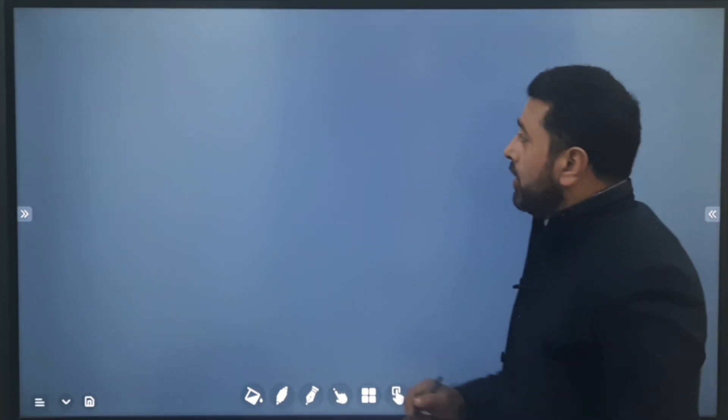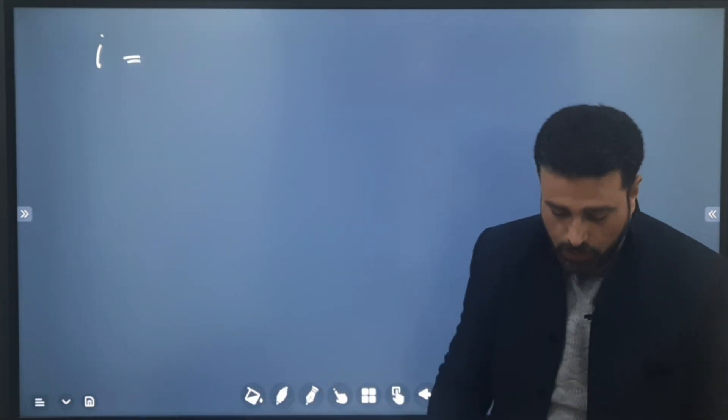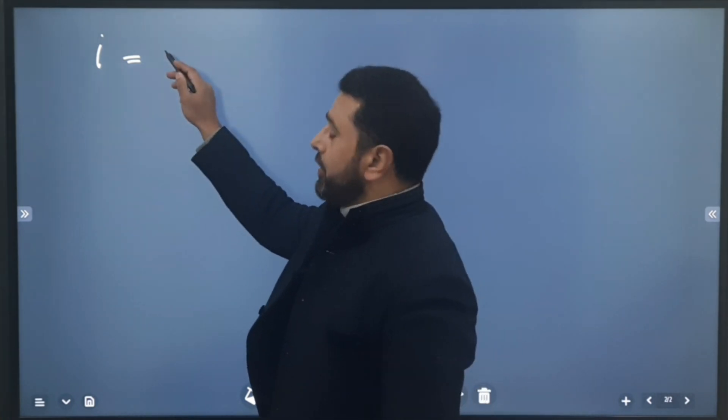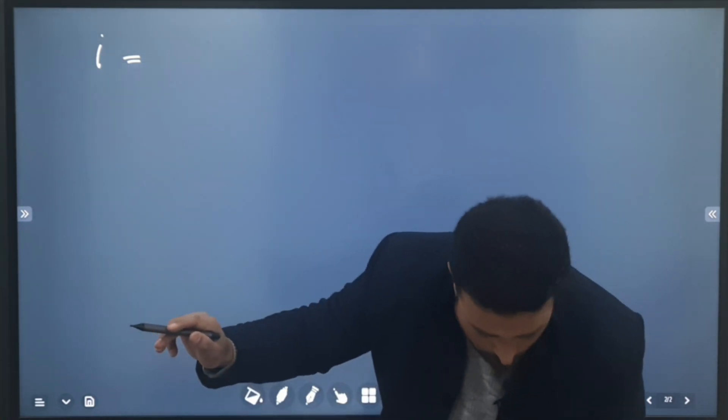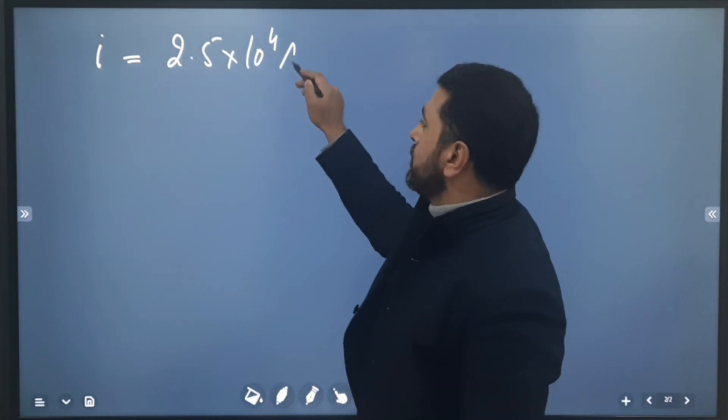So we have current in a lightning stroke. A lightning stroke from cloud to earth or cloud to cloud, whatever it is. A lightning stroke having a current of 2.5×10^4 amps.